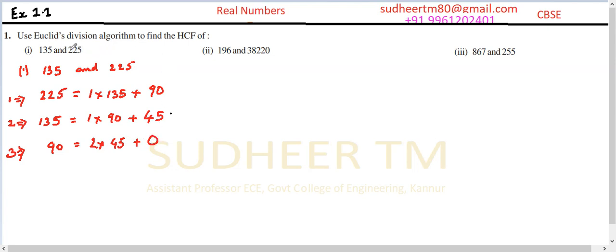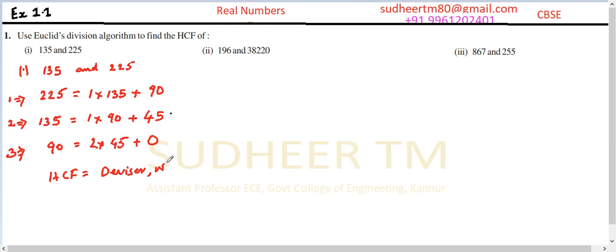By Euclid's division lemma, the HCF is the divisor when the remainder becomes 0. Here the divisor is 45 when the remainder is 0, so HCF is equal to 45.